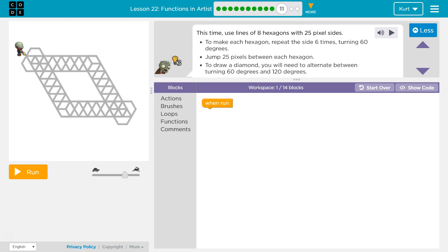So we're going to want to use a repeat six and draw that line six times while turning six degrees. I can already see jump 25 pixels between each hexagon.